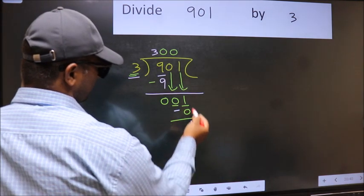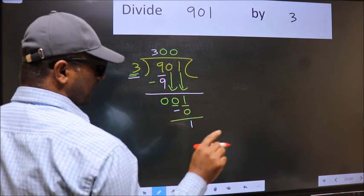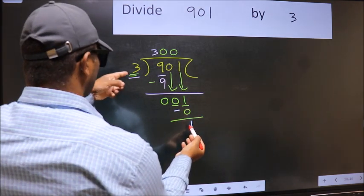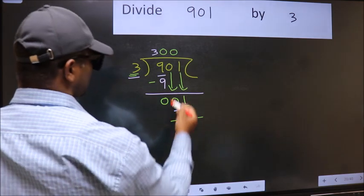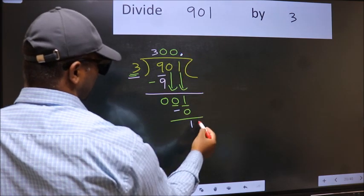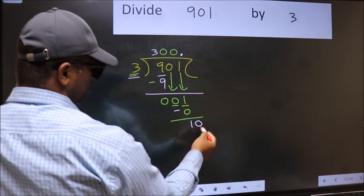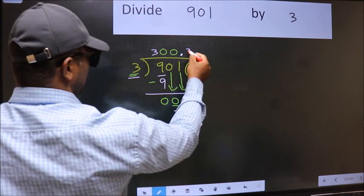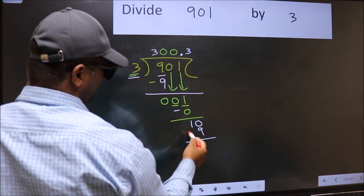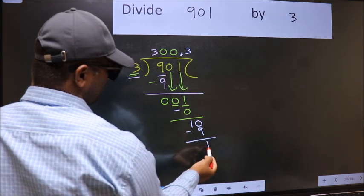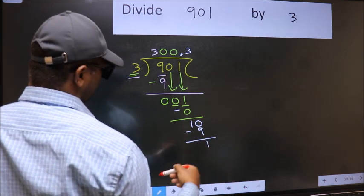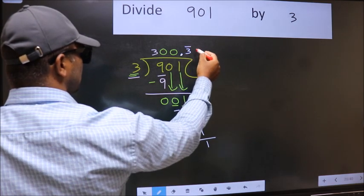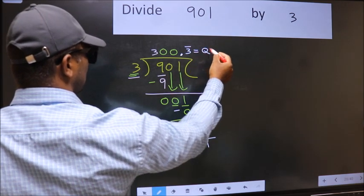Over here we did not bring any number down, and 1 is smaller than 3. So now we can put dot and take 0. So 10. A number close to 10 in 3 table is 3 times 3 is 9. Now we should subtract. We got 1 again. That means we get bar on this number. So this is our quotient.